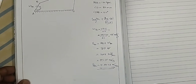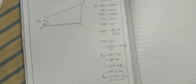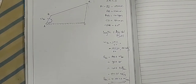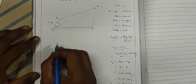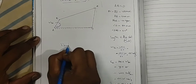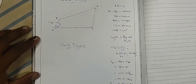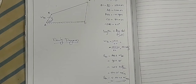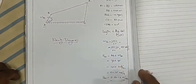Now starting the velocity diagram. The velocity of a link will always be perpendicular to the link in the space diagram. Before drawing the velocity diagram, we have to mark the fixed link. Here A and D are the fixed link.